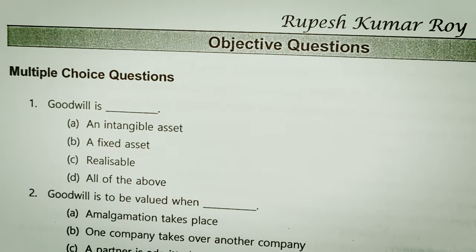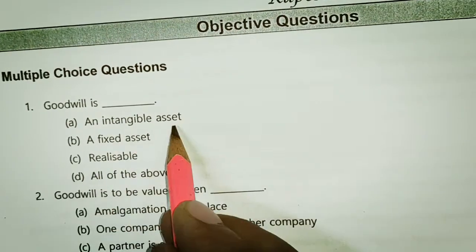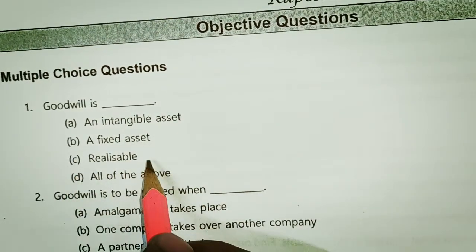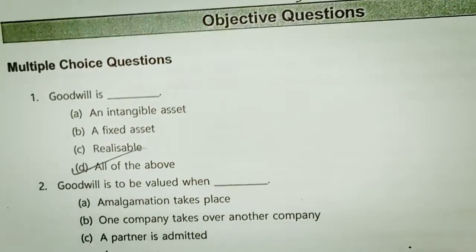Multiple choice questions. Goodwill is a: tangible asset, fixed asset, realizable asset, all of these.